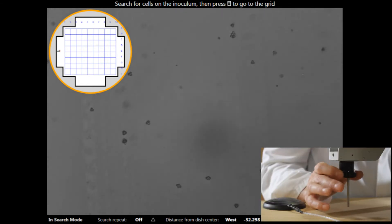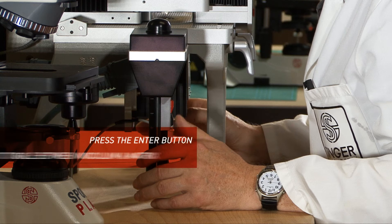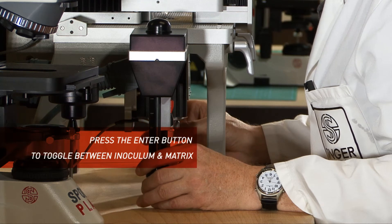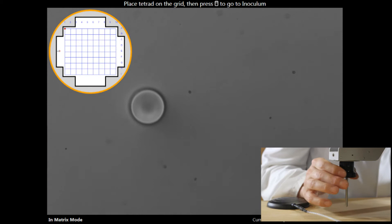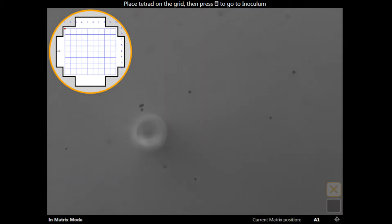I've picked up the tetrad and I'm going to take it to position A1 within the matrix. I'm just going to bring the needle back up to the surface, just like that. They've broken apart nicely.